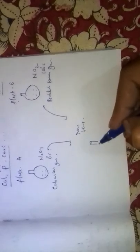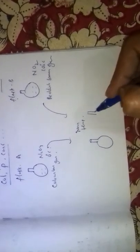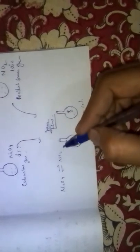Now these two flasks are brought to room temperature. Both flasks gain the same pale brown color. Because at room temperature, N2O4 dissociates to give NO2, and there is an equilibrium between dinitrogen tetroxide and nitrogen dioxide. In the other flask, NO2 dimerizes to give N2O4, and equilibrium exists.